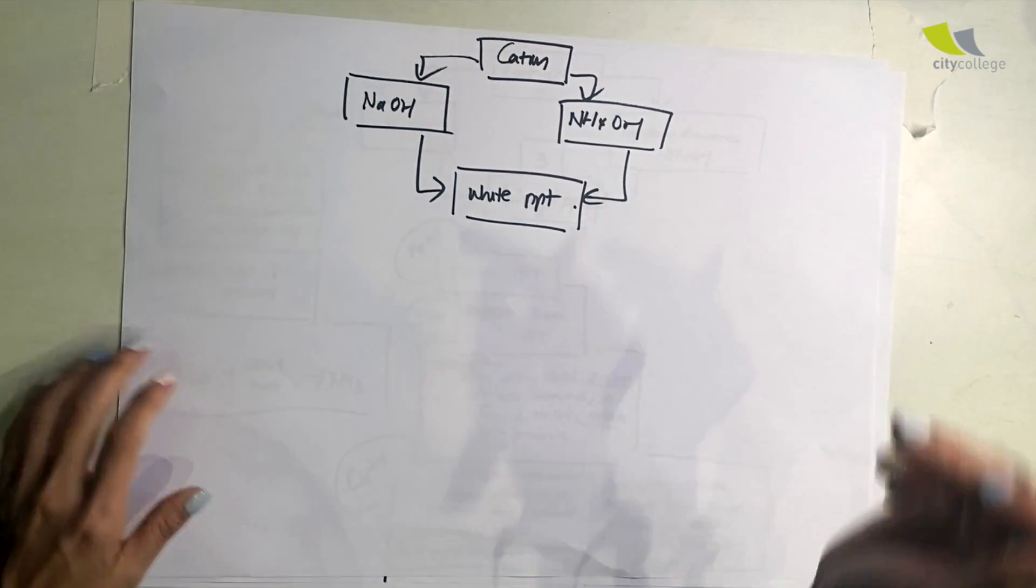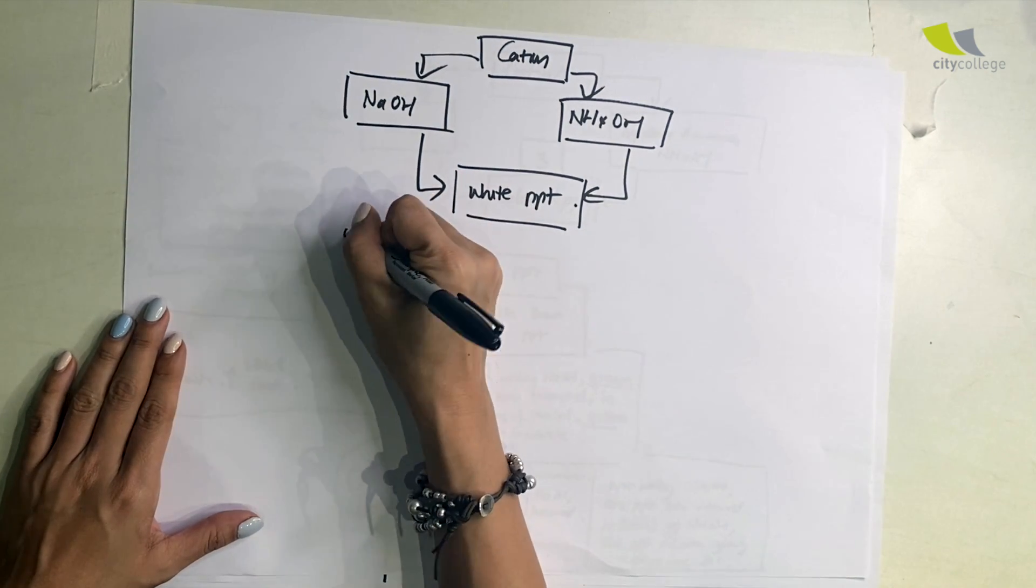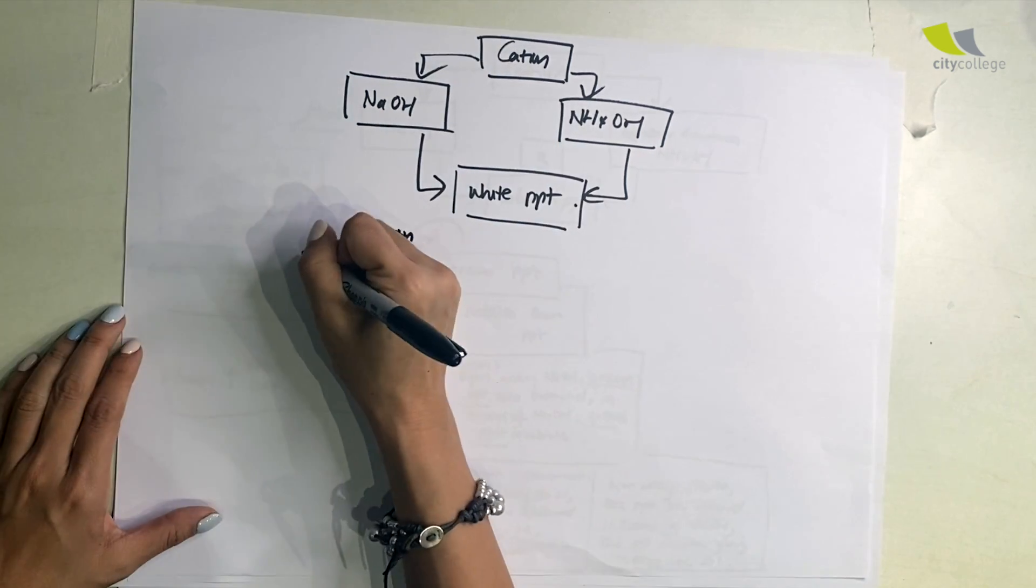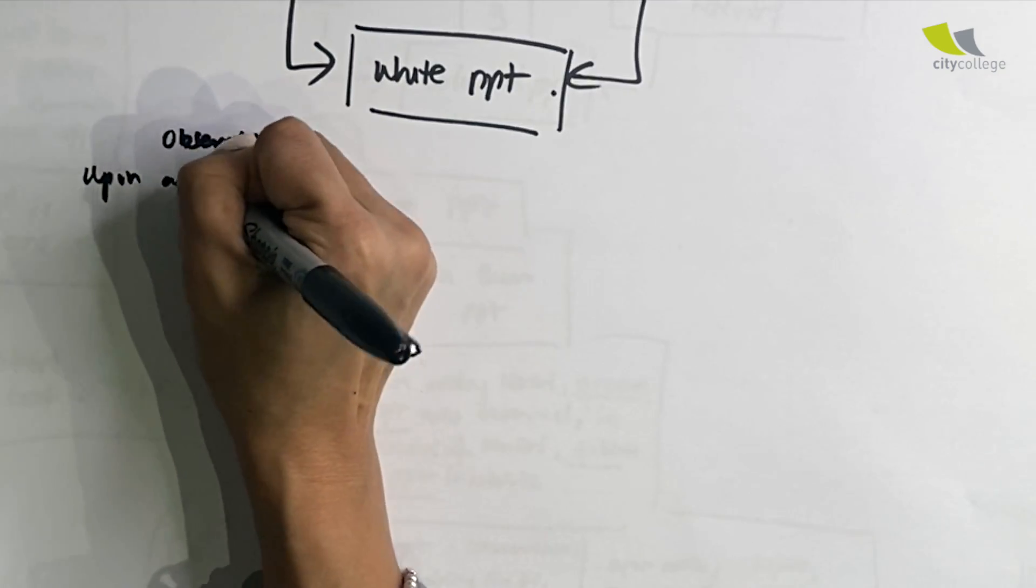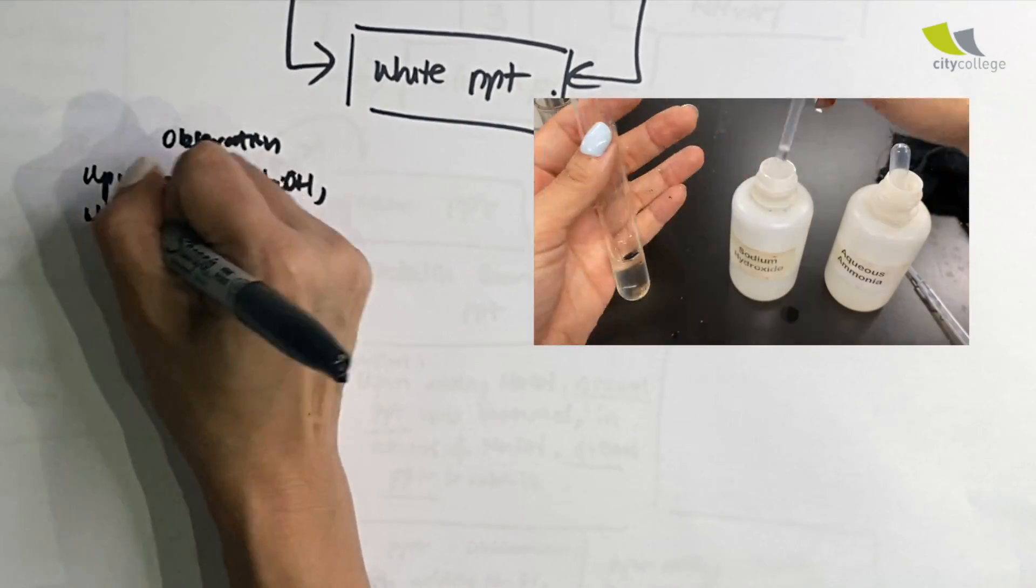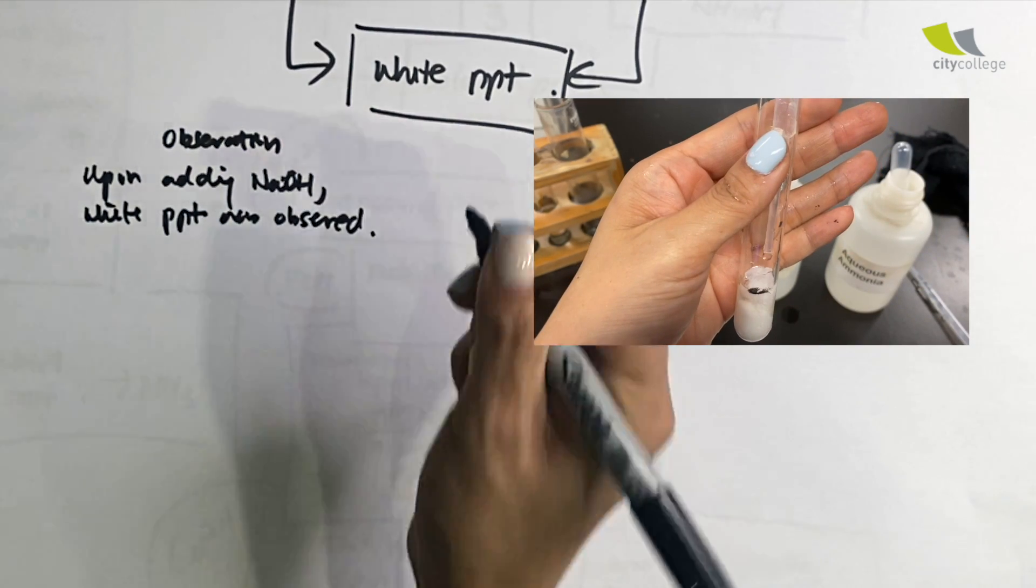Now we come to the white precipitate. For the white precipitate, it's very simple. Under observation for NaOH, upon adding NaOH, white ppt was observed. Like I say, you always add in excess, so in excess of NaOH...